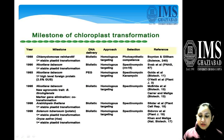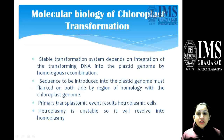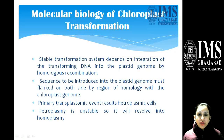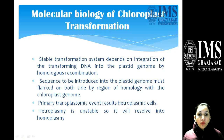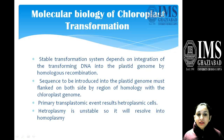If we go to the molecular biology of chloroplast transformation, it is a stable transformation that depends on the integration of transforming DNA into the plastid genome by homologous recombination. Where homologous sequences are present, integration must occur there. The sequence introduced into the plastid genome must be flanked on both sides by regions of homology with the chloroplast genome. Initially, transformation results in heteroplasmic cells, which is unstable, and later it is resolved into homoplasmic.